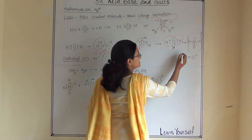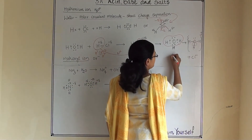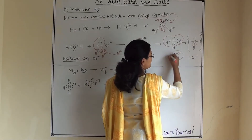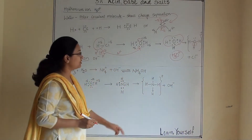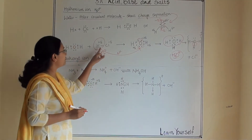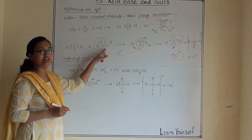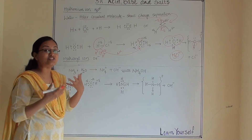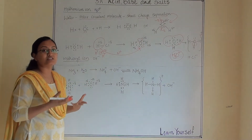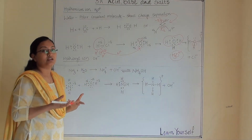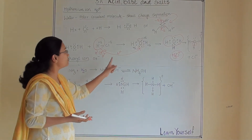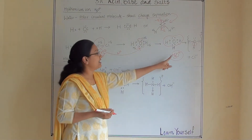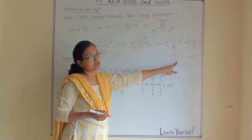Here you can see there are 3 H atoms, so this is H3O+. This is the formation of hydronium ion, which forms only in the presence of acid. When any acid dissociates in water and gives H+, that H+ combines with water and gives you hydronium ion.